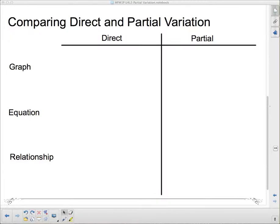Now, I am going to spend just a couple minutes here taking up this chart, just in case I don't get around to you in class or you need to hear me talk about it again. How do we compare direct and partial variation?